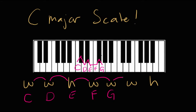Then we're going to go another whole step up to get to the sixth note of the C major scale. From G, we go to G sharp and then to A. So A is a whole step up from G. Then we go another whole step up to get to the seventh note of the C major scale. From A, we go up to B — we pass over A sharp and land on B. Finally, to get back to C, we go a half step up from B, and then we're back to C. So that is the C major scale.